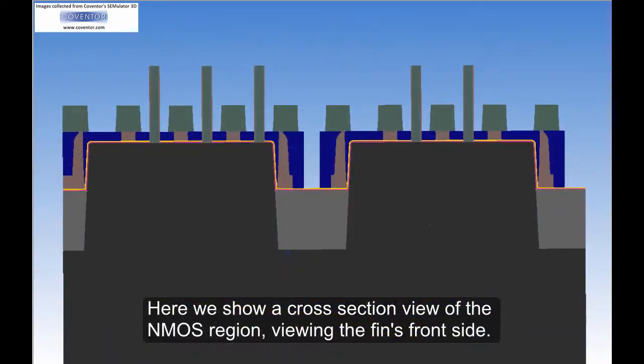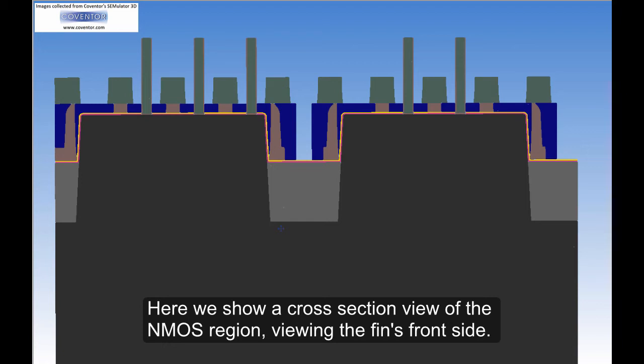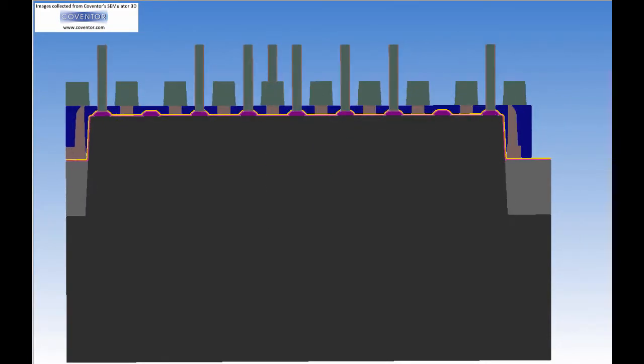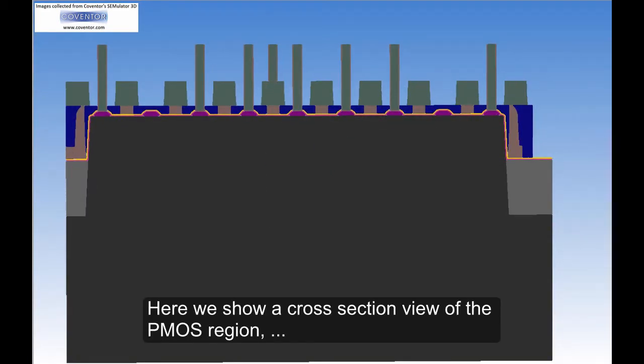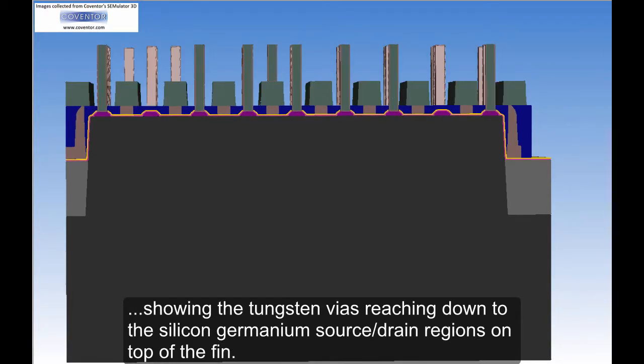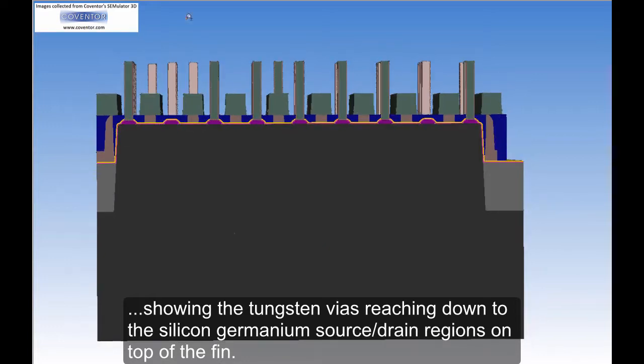Here we show a cross-section view of the NMOS region viewing the fin's front side. Here we show a cross-section view of the PMOS region showing the tungsten vias reaching down to the silicon-germanium source drain regions on top of the fin.